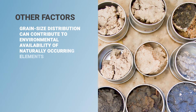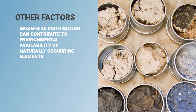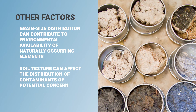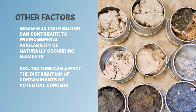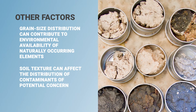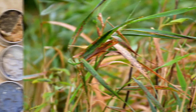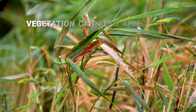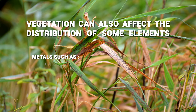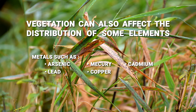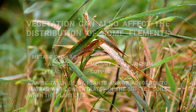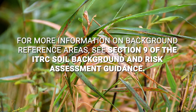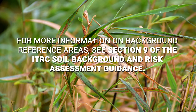There are also other factors to consider. Grain size distribution can contribute to environmental availability of naturally occurring elements. Soil texture can affect the distribution of contaminants of potential concern; for example, fine-grain soils typically have a greater sorption capacity for contaminants such as SVOCs and metals. Lastly, vegetation can also affect the distribution of some elements. Metals such as arsenic, lead, mercury, copper, and cadmium can be taken up by plants and/or adsorbed to organic matter and concentrated in surface soils when the plant dies. For more information on background reference areas, see Section 9 of the ITRC Soil Background and Risk Assessment Guidance.